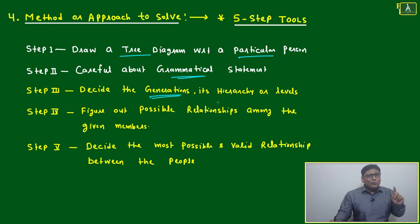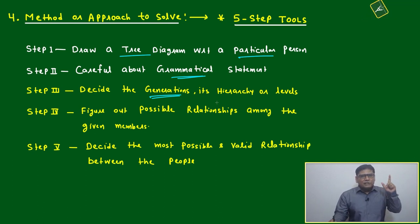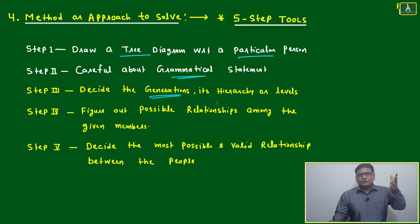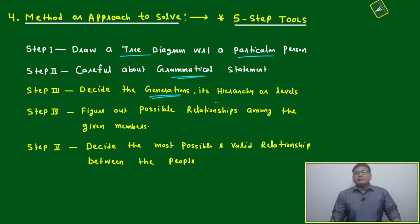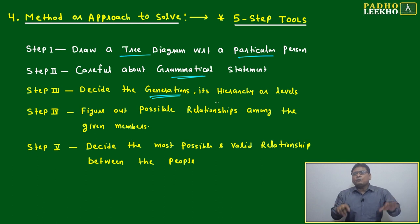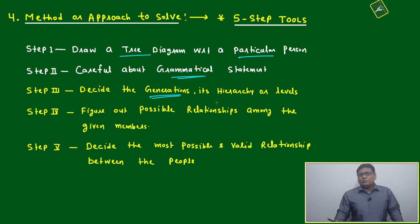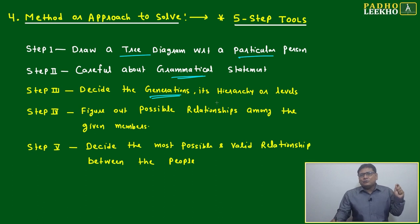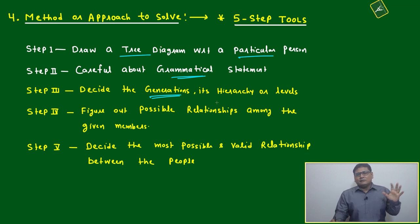First thing — once you look at the question, just by looking at it, immediately your brain will reply whether it is related to three generations, four generations, or two generations. That will give you one kind of conformity, and beyond that number, the relation cannot go. That gives you an ease of understanding.